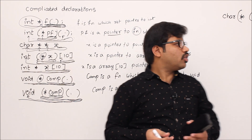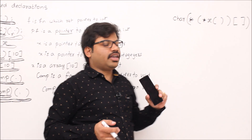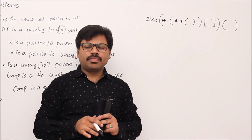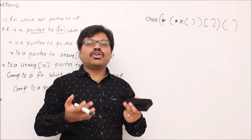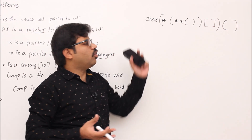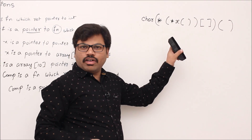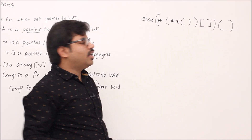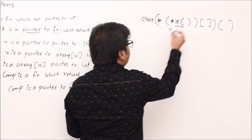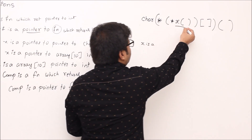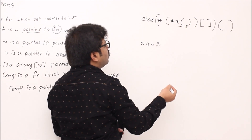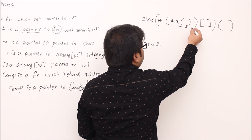Now we'll see one more complicated declaration. Stop the video and try to read it on your own. If you can, that's great — otherwise I'll explain. Now: 'x is a' — we see a function symbol, so 'x is a function.' Go right: there is a priority. Since the variable is surrounded by something, that is priority — go leftmost.